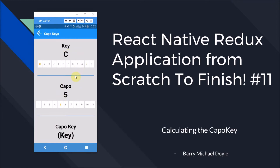What we're going to do in this video is calculate this capo key. It's based off of what the key is and the capo. For example, if we're on key C then capo 5 means we go one two three four five, so key C capo 5 gives us F. And if we're on A with capo 5, then A capo 5 is D. You've got to handle wrapping back to the start of the index, and all of this is handled in our selections reducer.